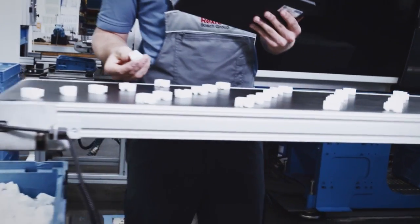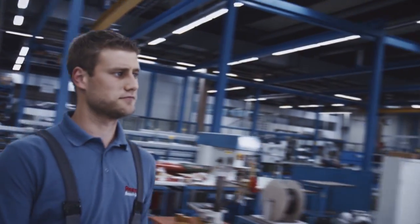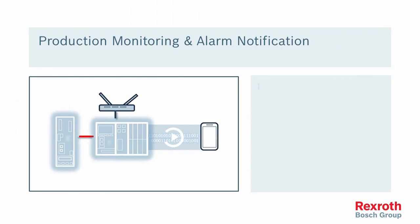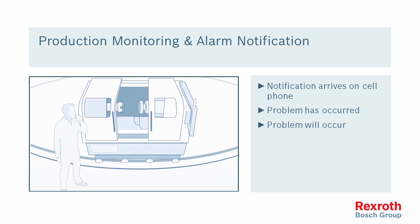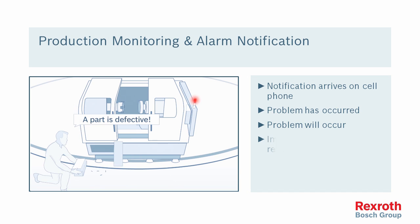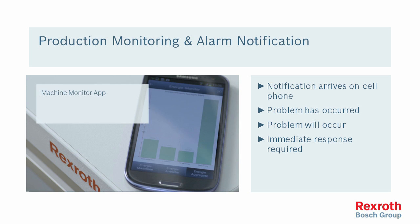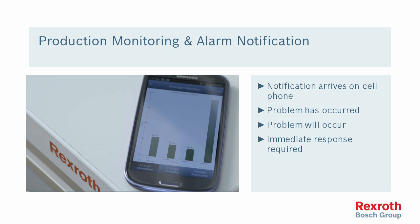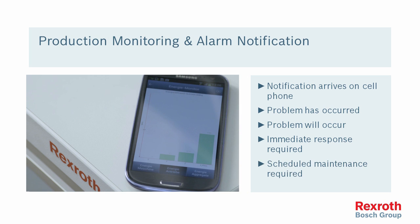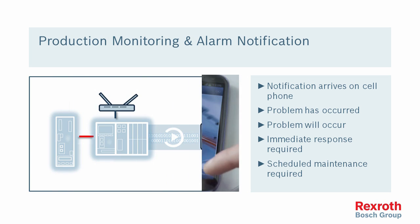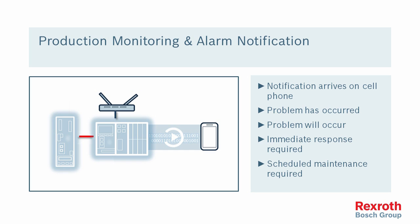The way it would be used is the maintenance person or engineer is off doing his job in some other part of the plant and gets a notification from a machine that a problem has either occurred or is about to occur — say, a gearbox is vibrating too much, a motor is getting too hot, or a process is getting out of spec. There can be an immediate response where a maintenance person is summoned to fix an urgent problem, or if something is gradually getting worse, the maintenance person can schedule maintenance at a time when production isn't running on the machine.